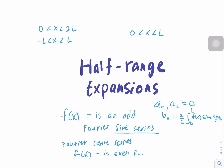For the Fourier cosine series, a₀ equals 2 over L times the integral from 0 to L of f(x) dx, and aₙ equals 2 over L times the integral from 0 to L of f(x) cos(nπx/L) dx, while bₙ equals zero.